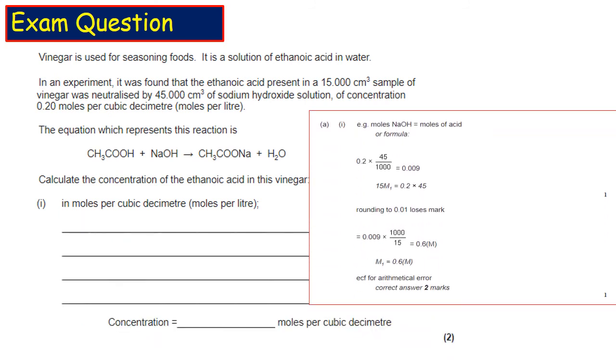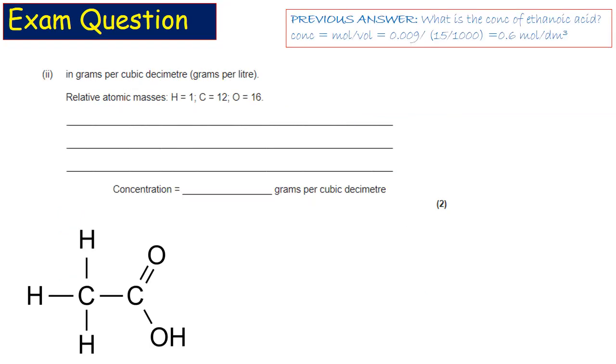Here's the official mark scheme just so you can see where they're awarding you the marks. Now they're asking us to convert our answer from the previous question into different units of concentration. Previously we had an answer of 0.6 mol/dm³ and they now want the answer in g/dm³.